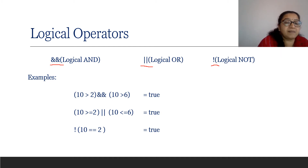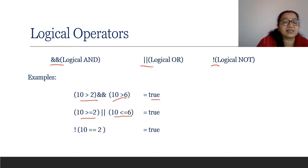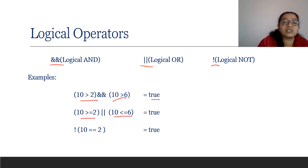Now check the examples. 10 greater than 2 AND 10 greater than 6 — both conditions are true, so we get the answer true. Next: 10 greater than or equal to 2 OR 10 less than or equal to 6 — 10 is not less than 6, but the first condition is true. Combined with OR, any one condition must be true, so we get true. Not (10 equal to equal to 2) — 10 is not equal to 2, so we get true.